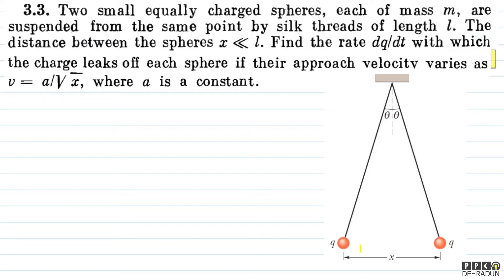So what is the question? The question is: here are two equally charged spheres of mass m, suspended from the same point by the help of silk threads of length l. This is the distance between the spheres, which is x. We need to find the rate dq/dt with which the charge leaks off each sphere.